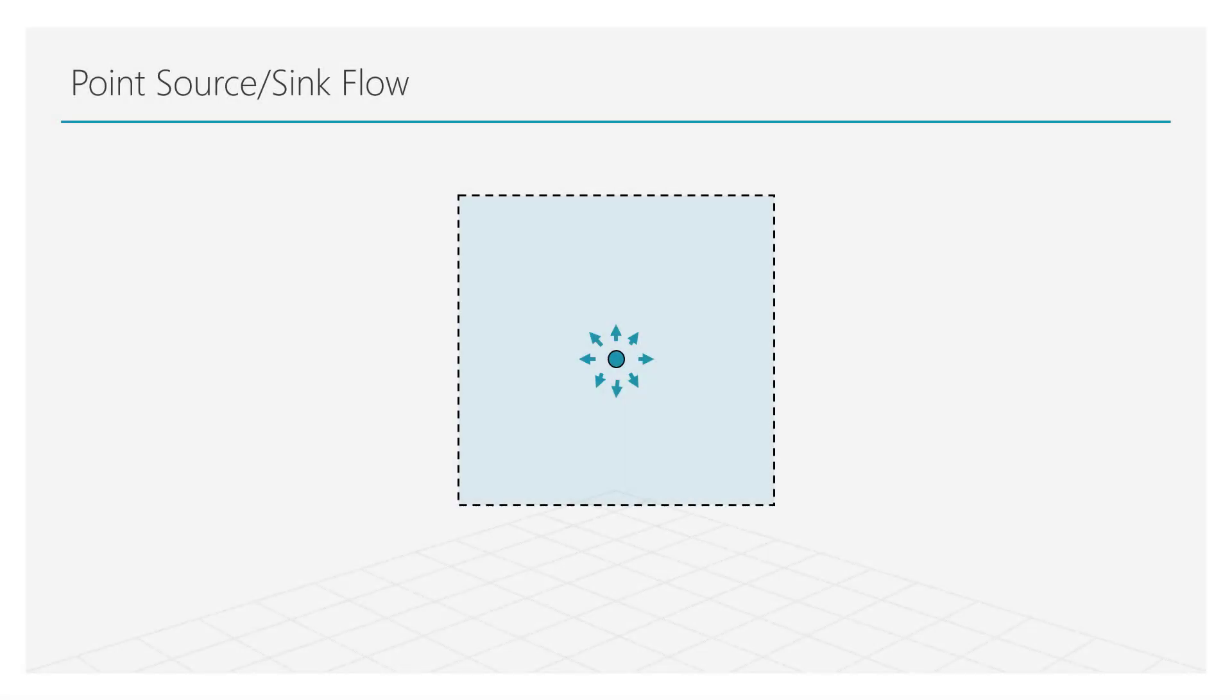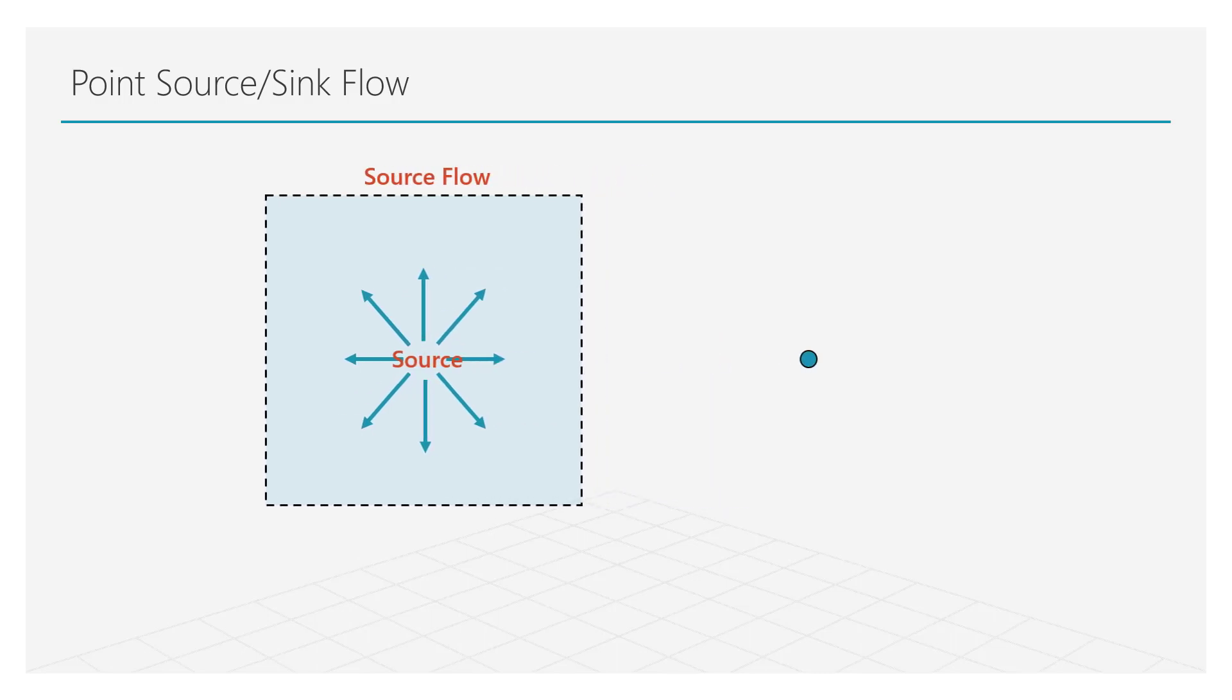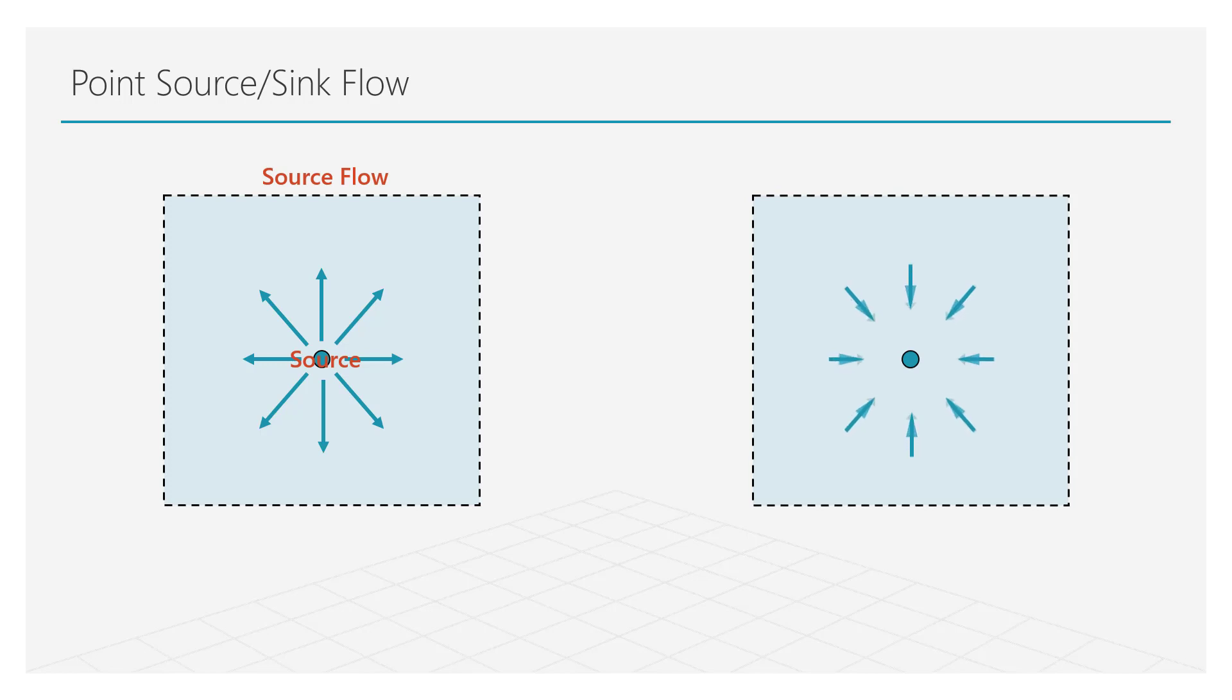Let us now look at another case. Imagine a two-dimensional flow, where the fluid is emanating radially outward from a single point. Based on this information, we can immediately draw the streamlines, which look like this. Such a flow field is called a source flow, and the point is referred to as the source. If instead, we have fluid radially flowing towards the point, we call the point a sink, and the flow is referred to as a sink flow. You can think of the sink flow as a negative source flow.